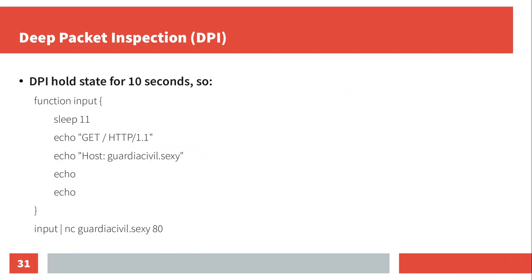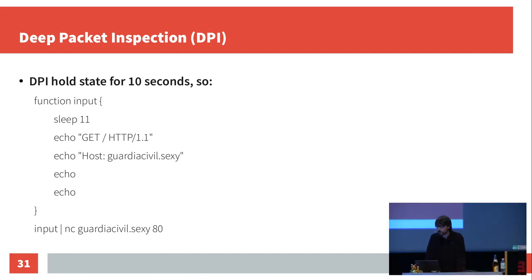With some tests, you could see that the deep packet inspection holds state for 10 seconds, because it can't hold state forever due to finite memory. So what you could do is connect an HTTP connection to port 80 with Netcat, wait 11 seconds before sending the HTTP GET request with the hostname, and then the filter doesn't apply.